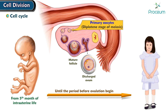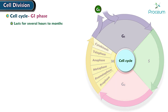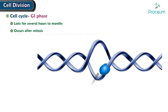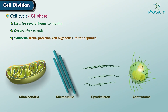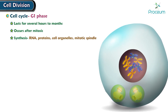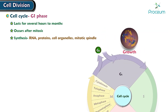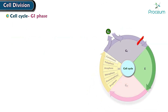Let's focus on events which take place during each phase. G1 phase: This phase lasts for several hours to months and occurs after mitosis. It is critical for the synthesis of RNA, proteins, and cell organelles. The synthesis of proteins required for mitosis, such as the mitotic spindle, is particularly important during this phase. There is one chromatid present per chromosome, the cell grows, and nucleotide excision repair takes place. At the end of this phase, there is a G1 checkpoint before entering S phase.